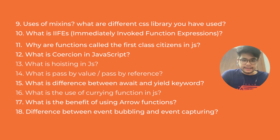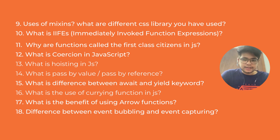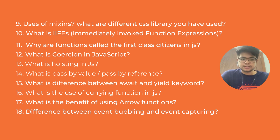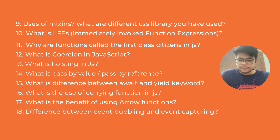What is the difference between the await and yield keywords? Await is used with async/await and yield is used with generator functions. What is the use of a currying function in JS — you need to explain a scenario where it is very suitable to use a currying function. What is the benefit of using arrow functions — you have to talk about the scope of 'this'.